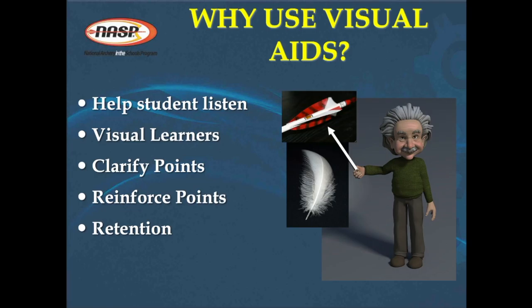And of course, if you show students what you're talking about and then let them actually do that thing — for example, fletch the arrow with a jig — you can get retention up to 75%. But there is a fourth and often overlooked way to increase retention: if you can train someone and then have them teach the material, they can get up to 100% retention.